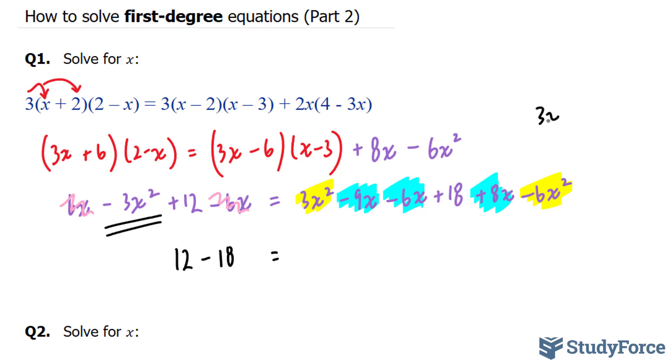Notice that 3x squared minus 6x squared gives us negative 3x squared. And if I bring that over, it becomes positive, positive 3x squared. So we end up with no more x squared terms. So this goes away, this goes away, and that goes away.